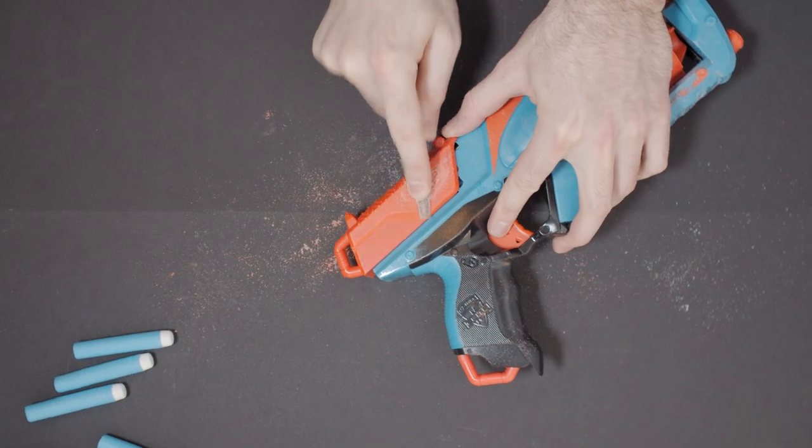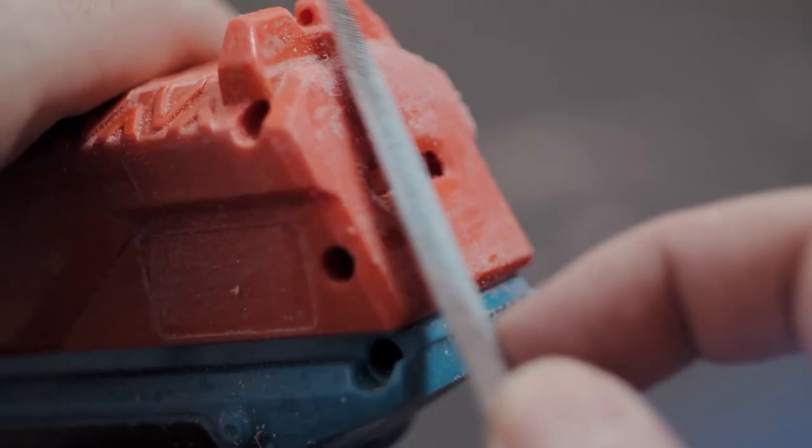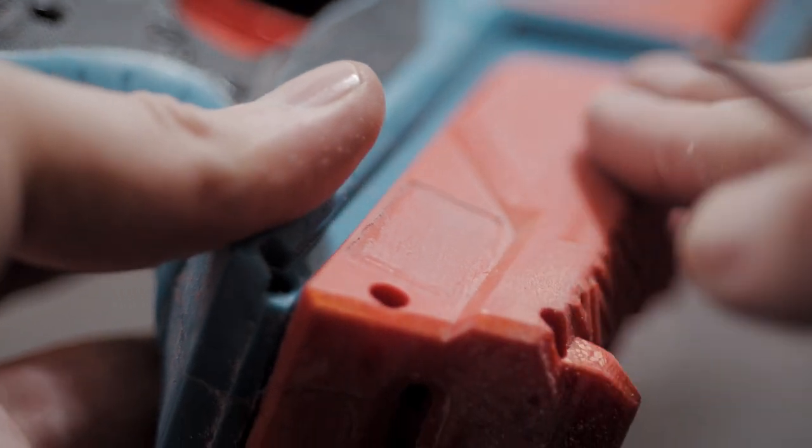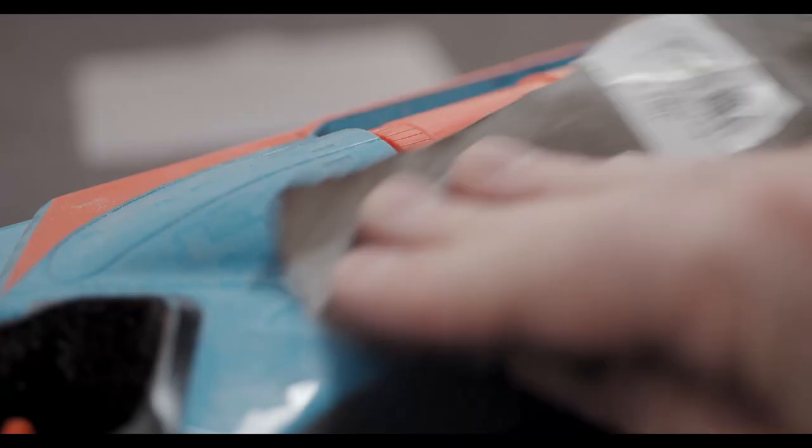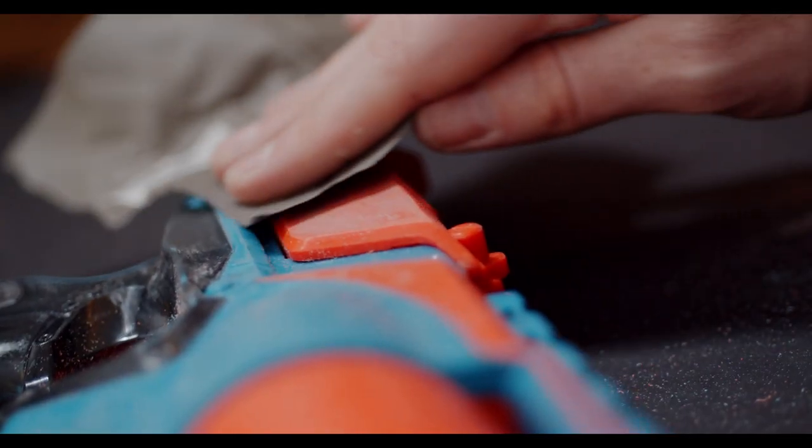Step one is going to be to file down all the logos and ridges. I'm using a file but you can use rough sandpaper as well, it's just going to take a little bit longer. After using the file I do go over the blaster anyway with sandpaper to make a better surface for the paint to stick to later on.